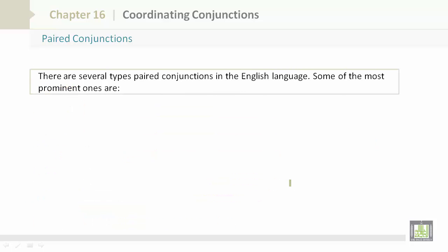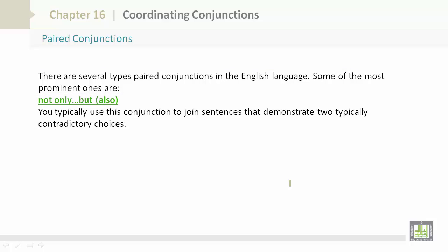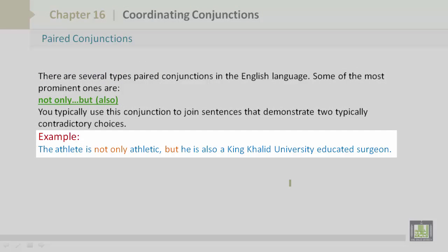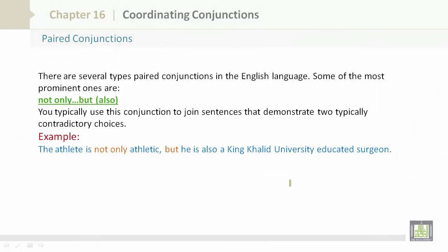There are several types of paired conjunctions in the English language. Some of the most prominent ones are not only but also. You typically use this conjunction to join sentences that demonstrate two typically contradictory choices. For example, the athlete is not only athletic, but he is also a King Khalid University educated surgeon. This demonstrates two typically contradictory choices. Someone is not really going to be an athlete who is a surgeon. So you use not only and but to stress that.